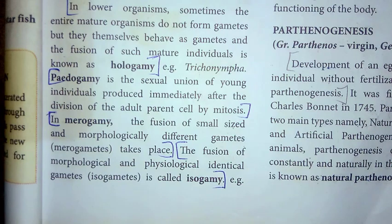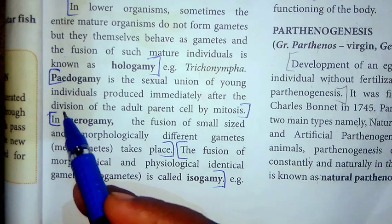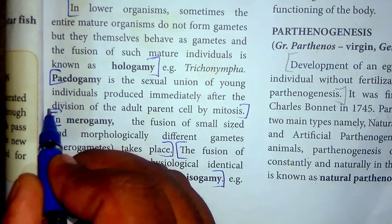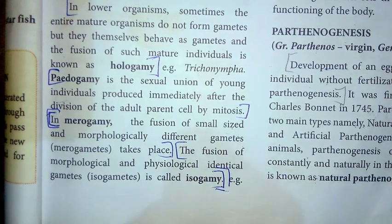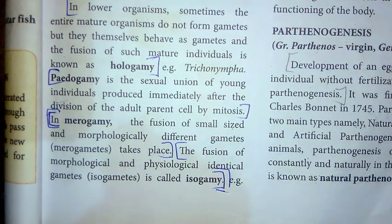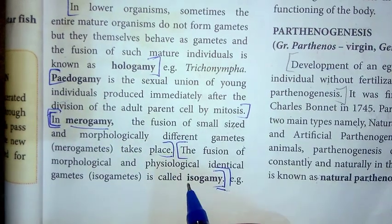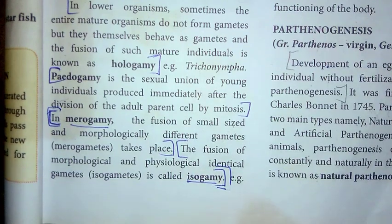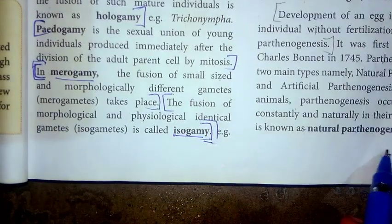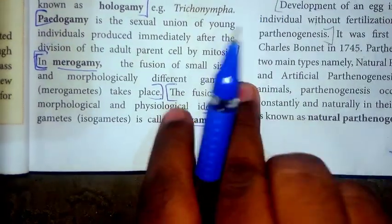For the third question: give short notes on anisogamy and isogamy. The answer for anisogamy and isogamy is found in page number seven. The answer for the second question (internal fertilization and external fertilization) is also in page number seven.